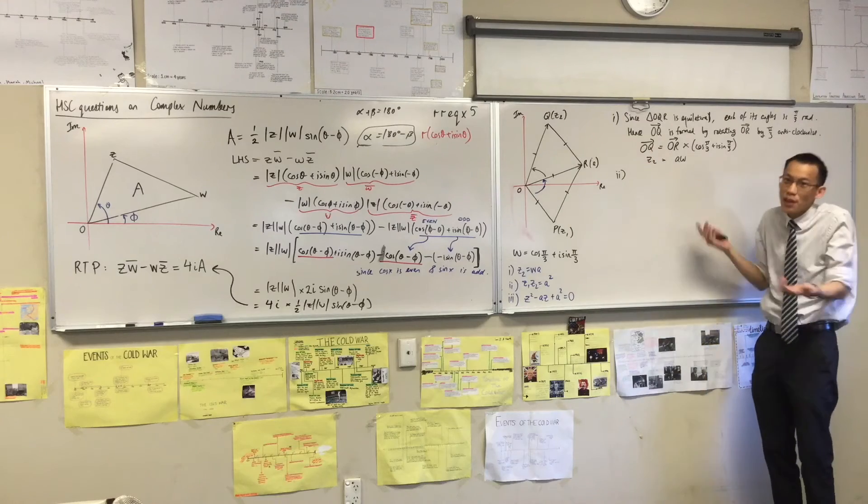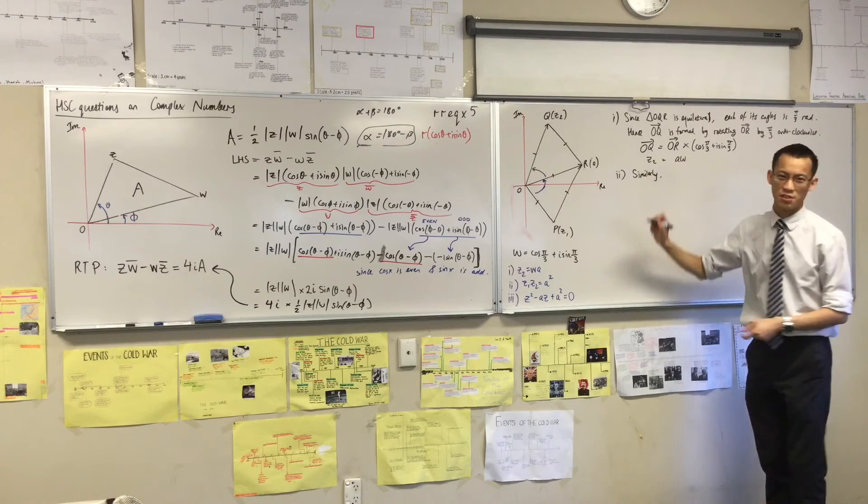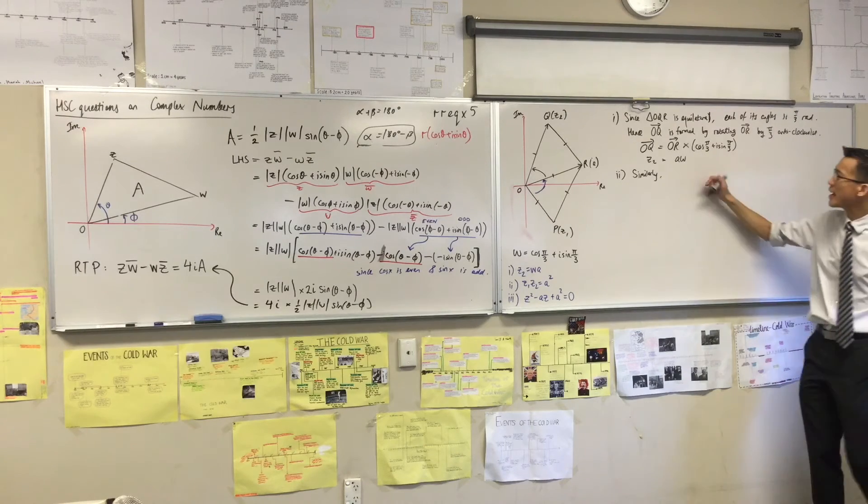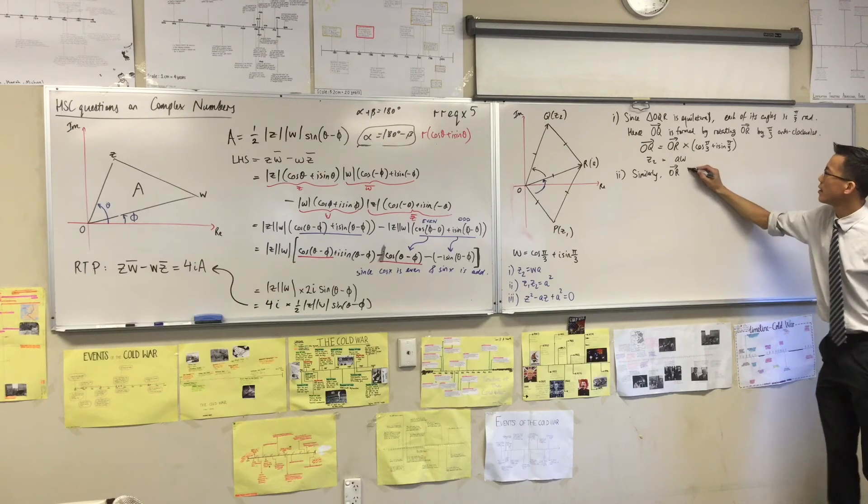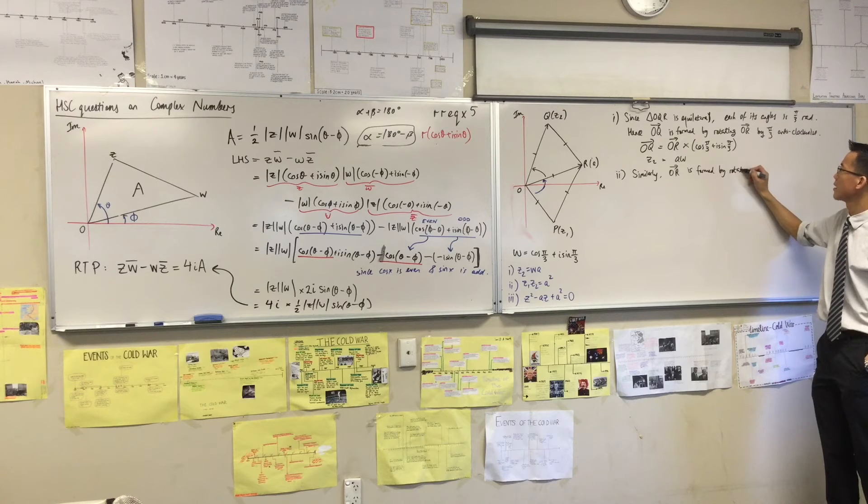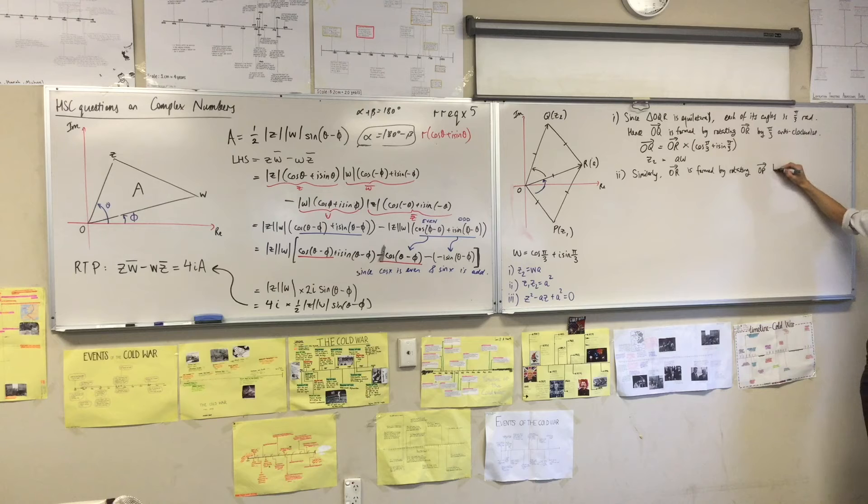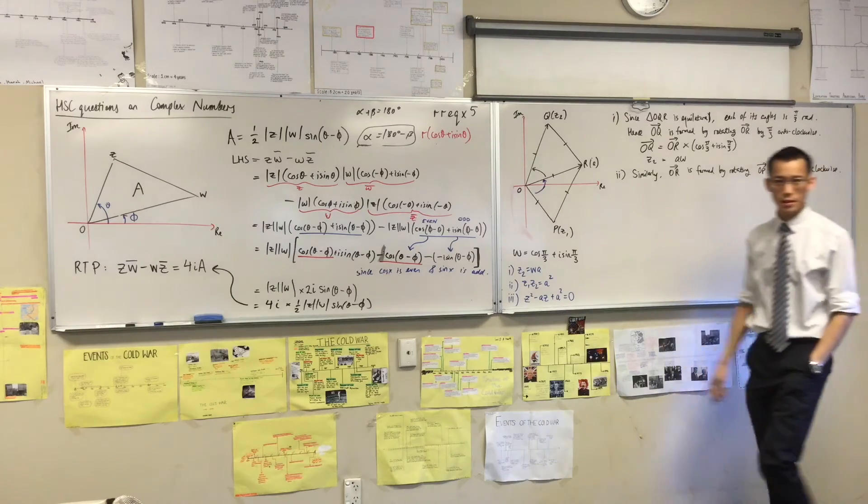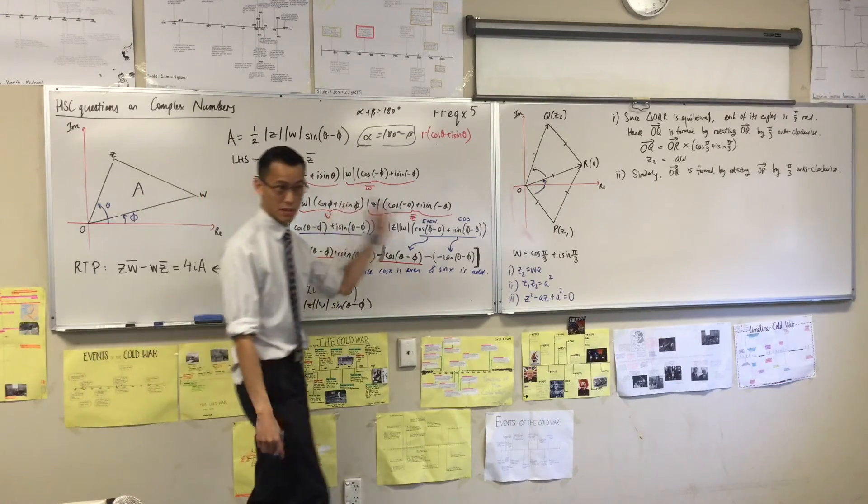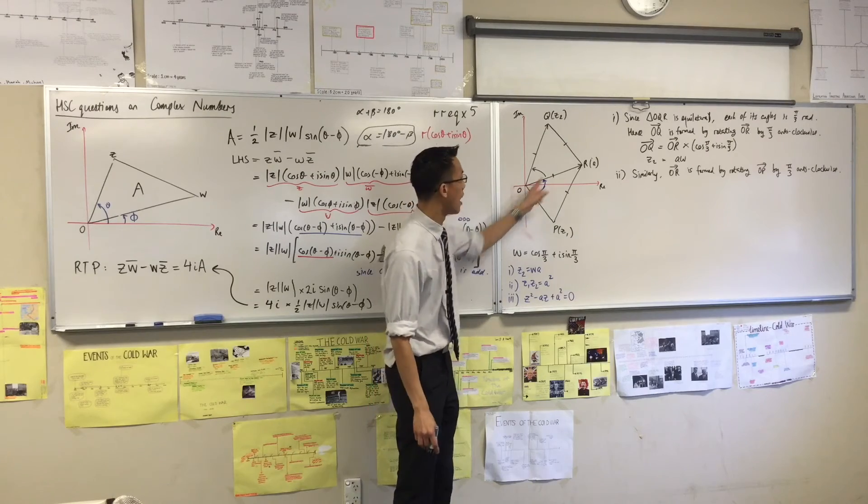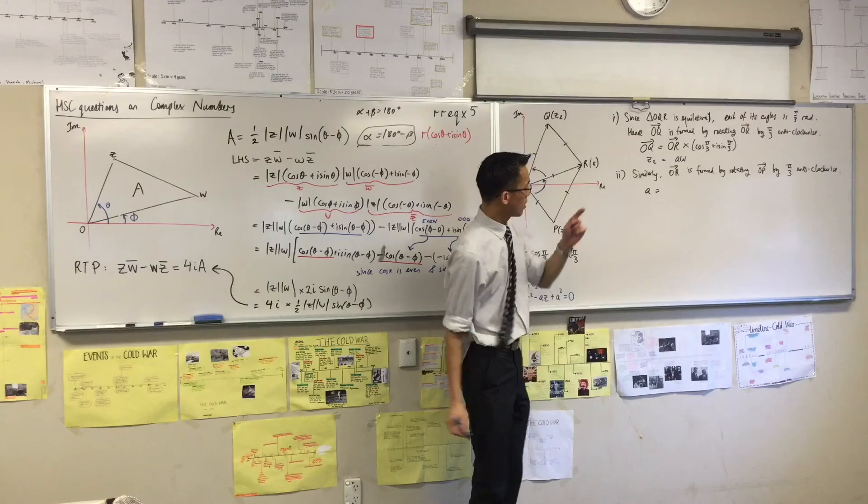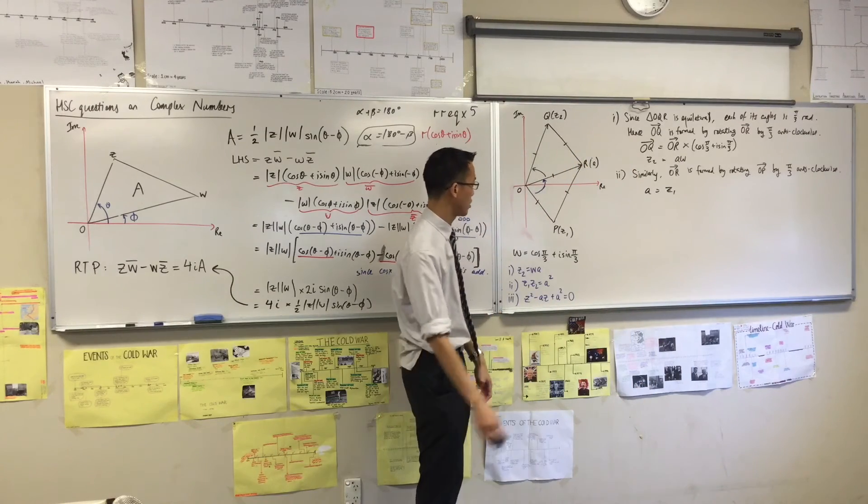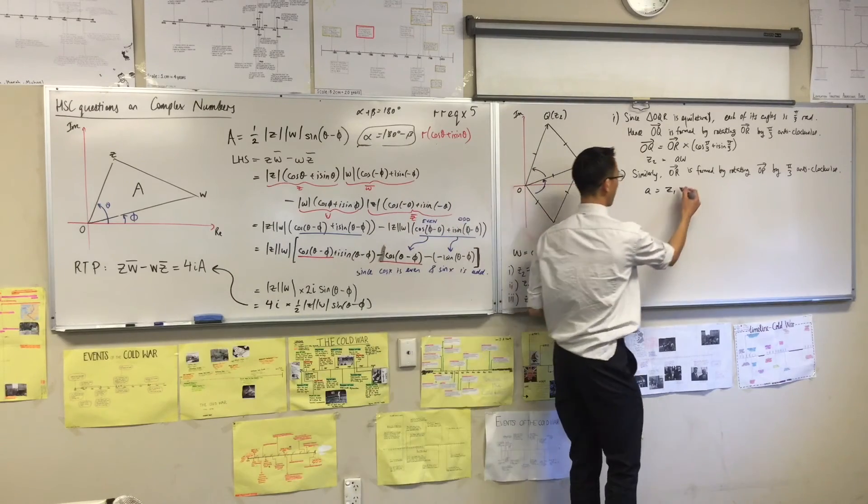So anytime you've got geometric reasoning, if you've done some, try to reuse it, because then you don't have to say it all over again. So I can say, similarly—that's such a good word—similarly, I've got the same equilateral triangle down the bottom. In fact, they're congruent. So I can say OR is formed by rotating OP in the same way. Because I've kind of laid that point, I'm going to go straight to the complex number form. So the complex number representing OR is A. The complex number representing OP is Z1. And then that π on three anticlockwise rotation is going to be W.